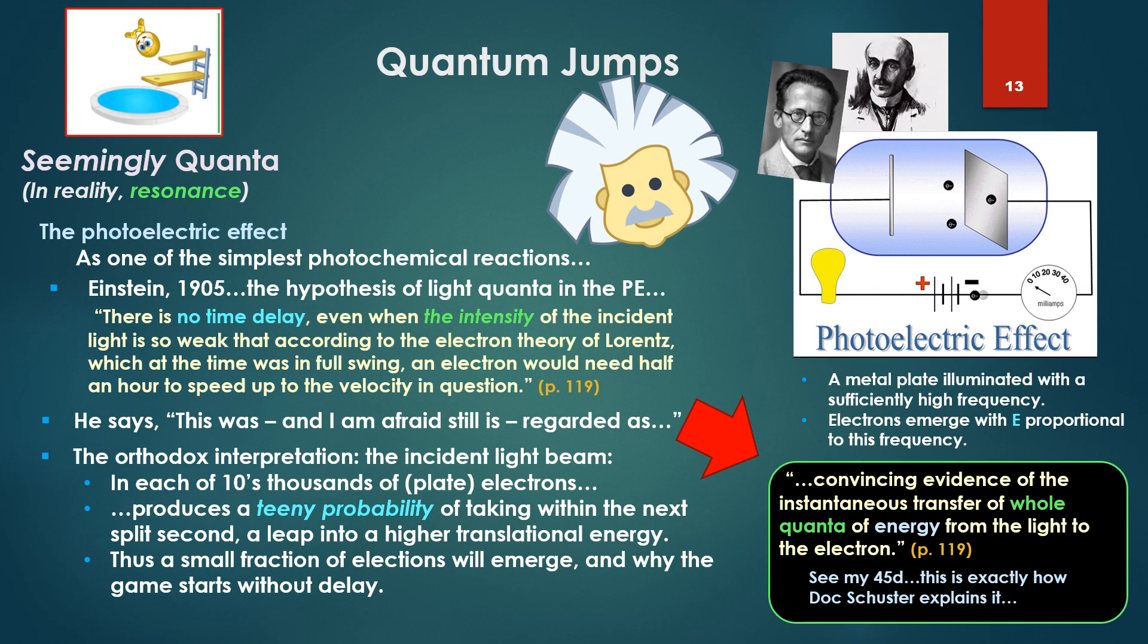There is no time delay, said Schrödinger, even when the intensity of the incident light is so weak that according to the electron theory of Lorentz, which at that time was in full swing, an electron would need half an hour to speed up to the velocity in question, but yet there is no such delay.